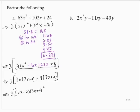But now these brackets are redundant. So I'd have 3 times 7x plus 2 times 3x plus 4.